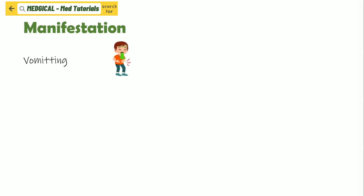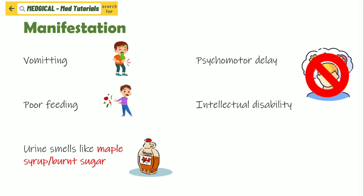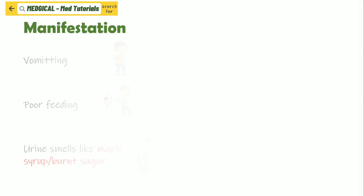Manifestations of Maple Syrup Urine Disease consist of vomiting, poor feeding, and urine that smells like maple syrup or burnt sugar. Another manifestation is psychomotor delay and intellectual disability. If the disease gets really severe or serious, it will lead to death.